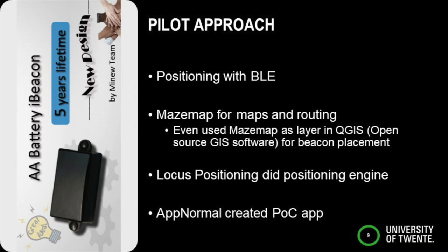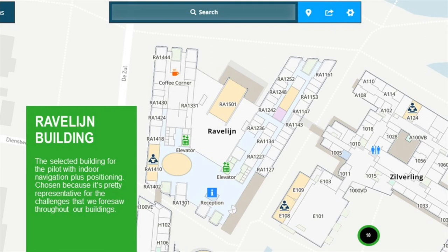In our pilots we did indoor positioning with Bluetooth Low Energy beacons — you can see the really cheap BLE beacons we got from China. We used Mazemap for the maps and routing, and even used Mazemap in an open source geo-information system for beacon management to record where the BLE beacons were placed. We had a small spin-off company for the positioning engine and another company to create an app. The building we selected had challenges: a large atrium in the center and parallel corridors which are sometimes hard to distinguish due to positioning inaccuracies.